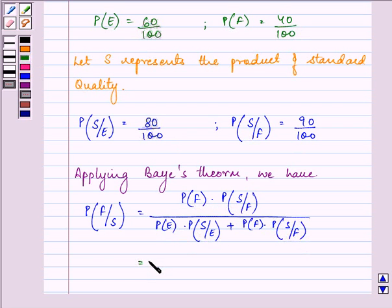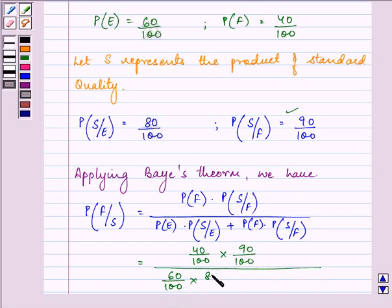Now we have all these values found out above. We can just substitute in the values. We have probability of F as 40 upon 100 into 90 upon 100 divided by 60 upon 100 into 80 upon 100 plus 40 upon 100 into 90 upon 100.